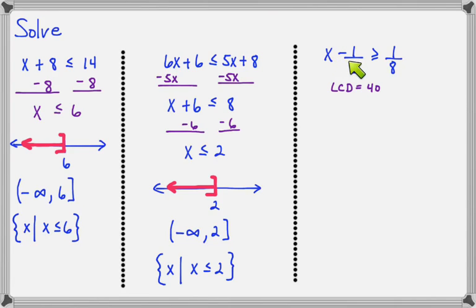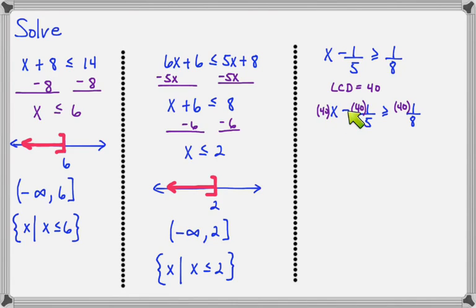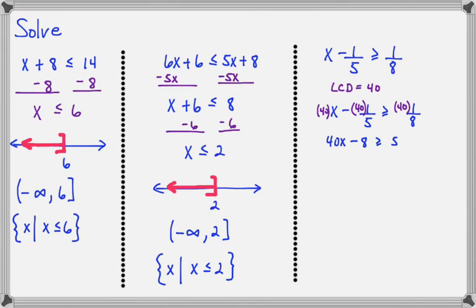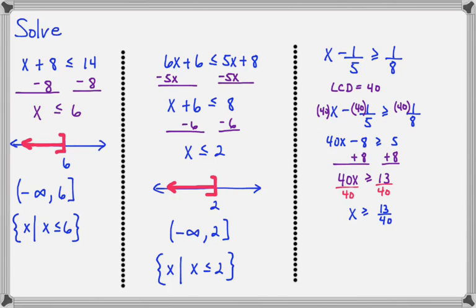Here's another inequality: x minus one-fifth is greater than or equal to one-eighth. Since this has denominators, we want to multiply them away using the common denominator. We multiply each term by 40, because 5 and 8 give a common denominator of 40. So 40 times x is 40x; 40 divided by 5 is 8; and 40 divided by 8 is 5. Continue solving — add 8 to both sides to get 40x is greater than or equal to 13, then divide both sides by 40.